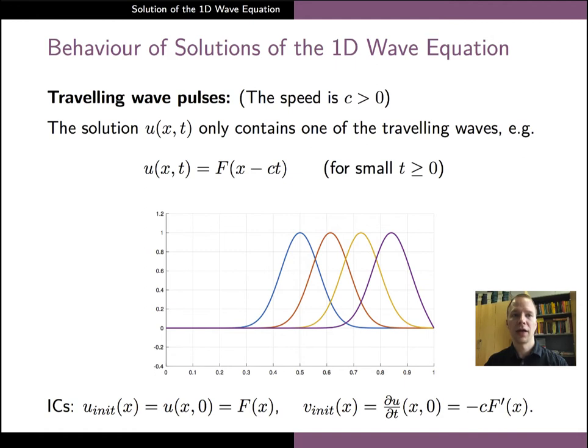As the functions f and g in the solution are determined by the initial conditions of the wave equation, we can ask what kind of initial displacement and initial velocity give rise to the solution that only contains a single traveling wave. This question can be answered fairly easily by simply substituting time equals zero into the form of the solution that we aim to get and its time derivative.